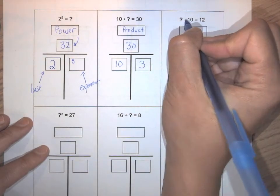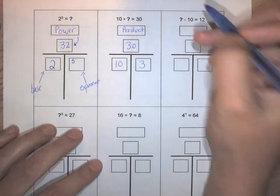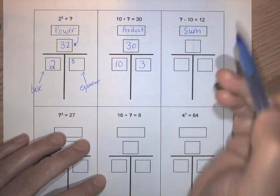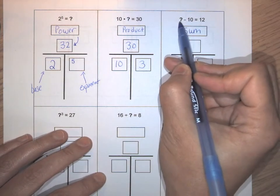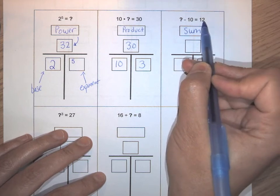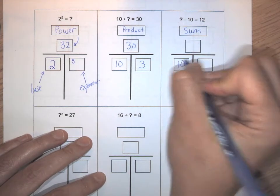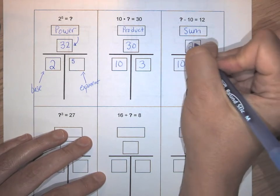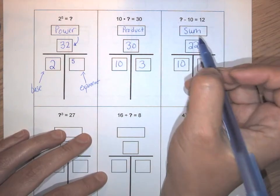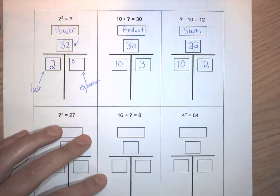I have a subtraction here, and a difference is not one of the options, so I need to choose the inverse relationship, which is going to be a sum relationship. The question is: what, if I subtract 10 from it, gives me 12? The inverse would be 12 plus 10 gives me what — so it's the sum that I'm missing. 10 plus 12 is 22, and that models the relationship 22 minus 10 equals 12.